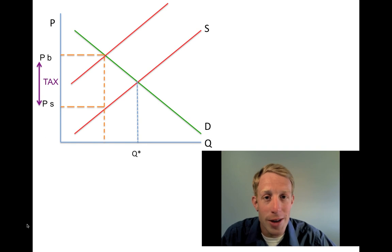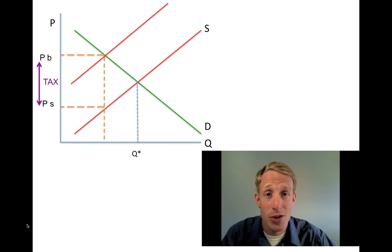Now, the quantity does decrease. We go from Q star, which was the market quantity prior to the tax, to now Qt, which is the quantity that prevails when the tax is in place.